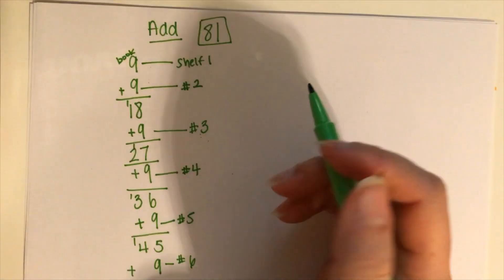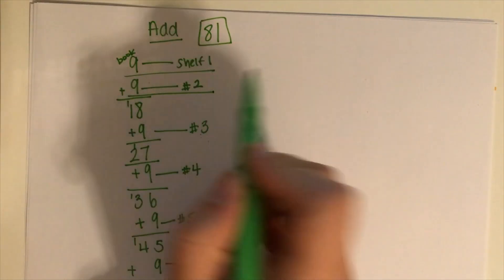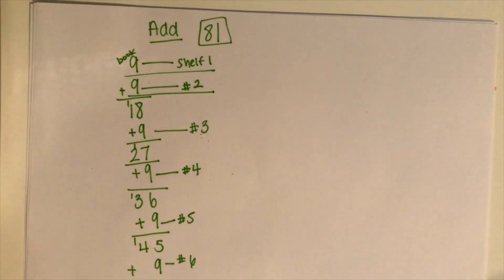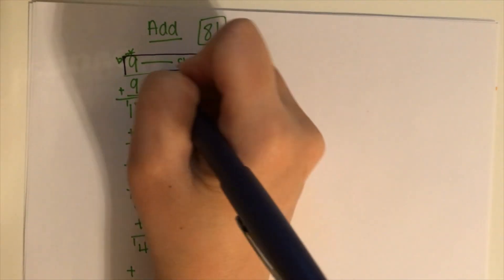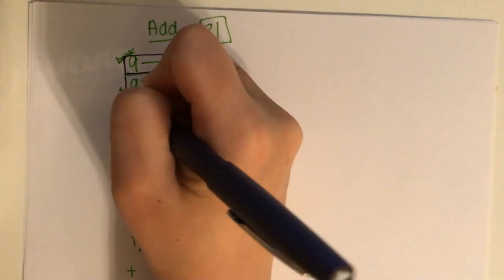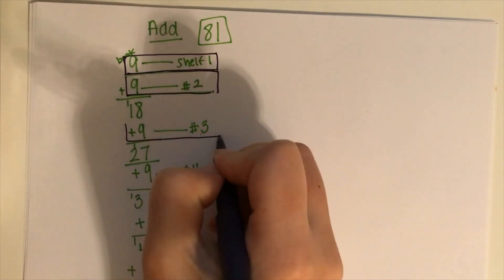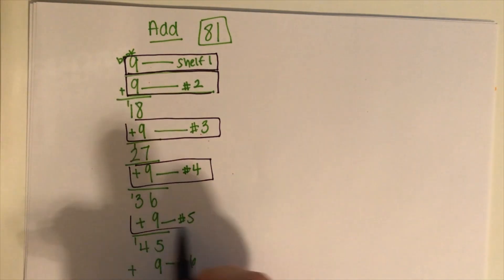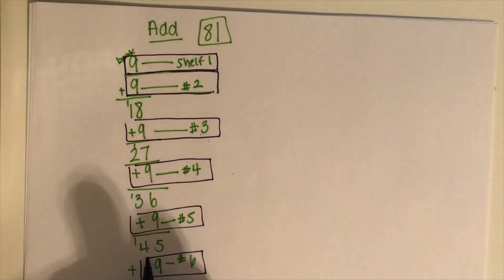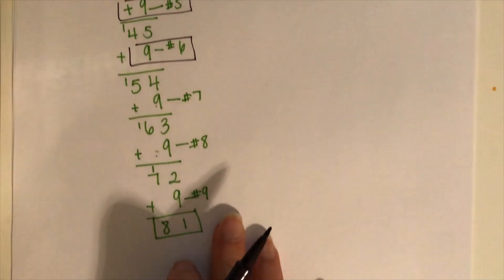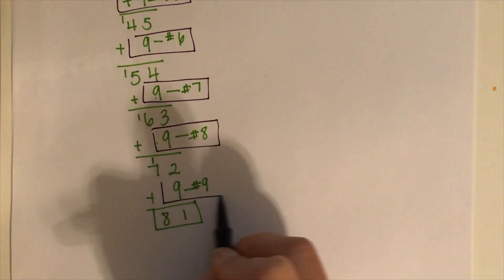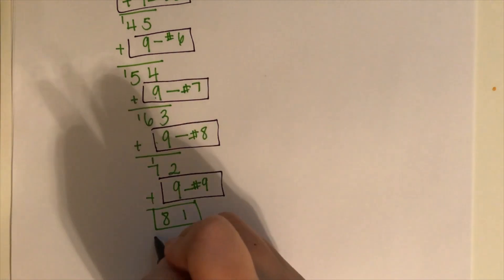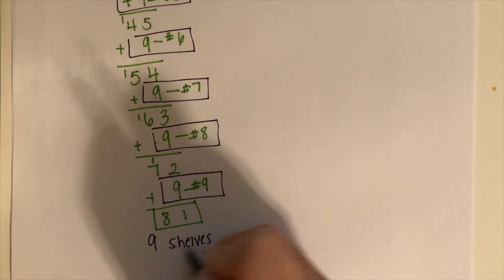So if you count up all the nines that you had, that's one, two. So let me switch the pens here for you. So this is number one. This is number two. This only the nines. That's number three. Number four. Five. Six. We have to move up to show you. Seven. Eight. And nine. So again, it came out to nine shelves.